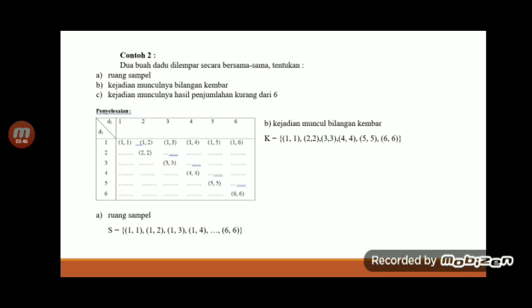Yang C, kejadian munculnya hasil jumlah kurang dari 6. Kita cari yang kurang dari 6. Itu adalah 1 ditambah 1, 1 ditambah 2, 1 ditambah 3, 1 ditambah 4, 2 ditambah 1, 2 ditambah 2, 2 ditambah 3, 3 ditambah 1, 3 ditambah 2, dan yang terakhir adalah 4 ditambah 1. Berarti ada 10.